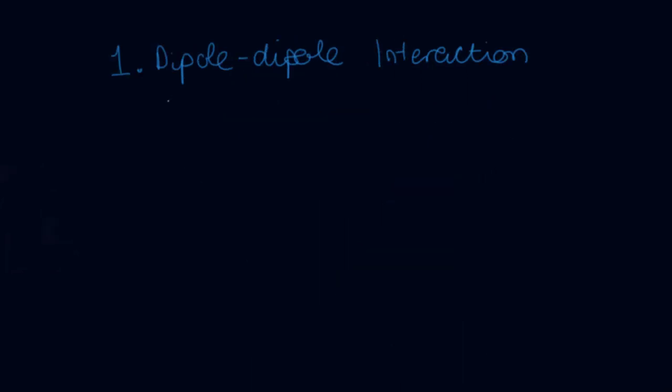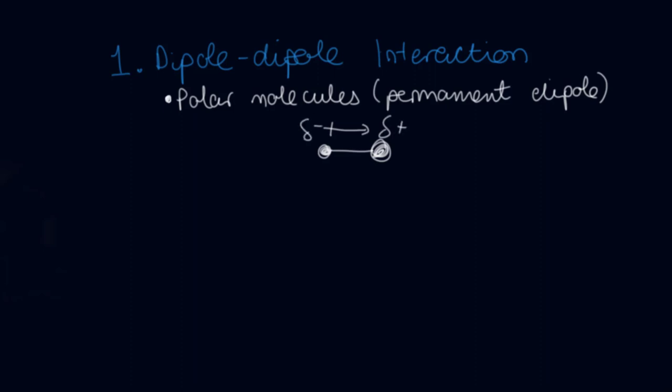First up, dipole-dipole interactions. These interactions occur when the molecules involved are polar, and so they have a permanent dipole, a more positive part and a more negative part. The molecules will arrange themselves so that the positive end of a polar molecule will attract the more negative end of the other molecule and influence its position. This arrangement reduces the potential energy of the material, which is a more favorable state for the material to be in.